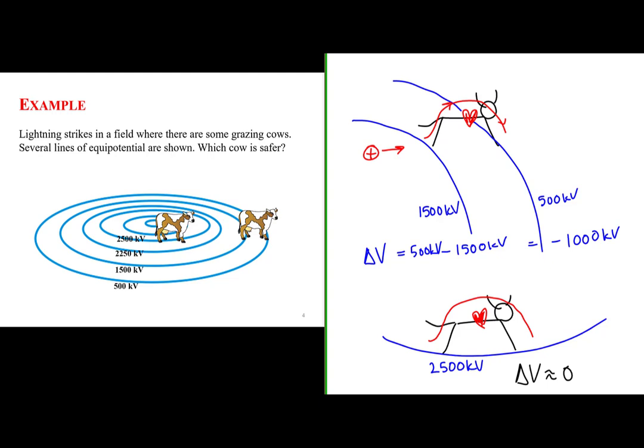The moral of the story is this: it's not the value of electric potential at a point that's dangerous. At a single point, it could be a thousand volts, a million volts, a billion volts — that doesn't matter. What matters is if there is a change of potential between two points. That potential difference, that voltage, will enable charges to accelerate. Positive charges accelerate from high to low potential, negative charges from low to high. Those charges will only accelerate in response to a difference in electric potential. So which cow is safer? The one in which its feet are at the lower difference in potential.